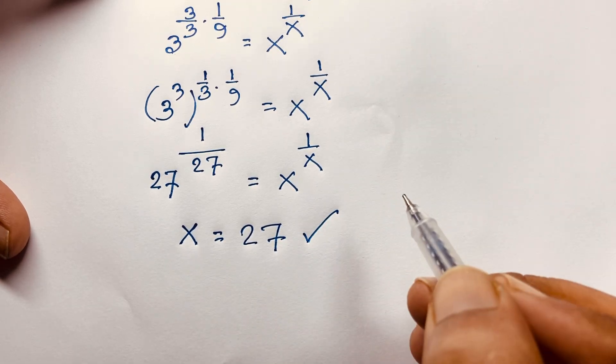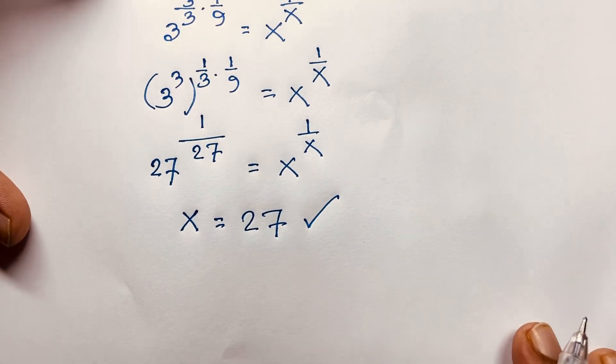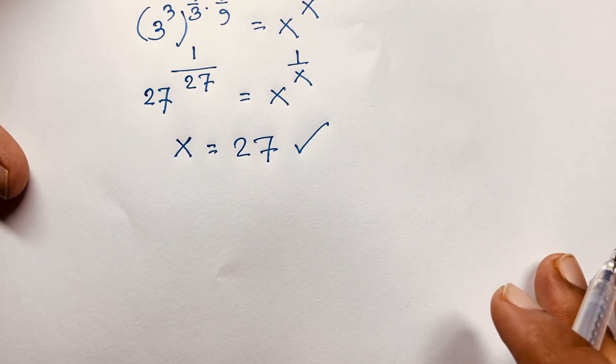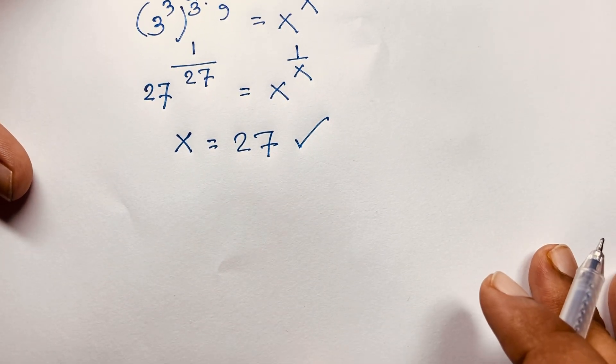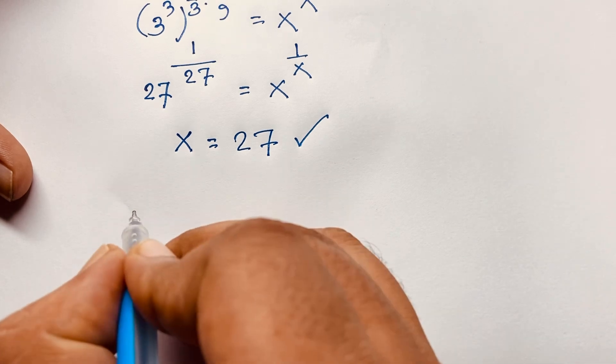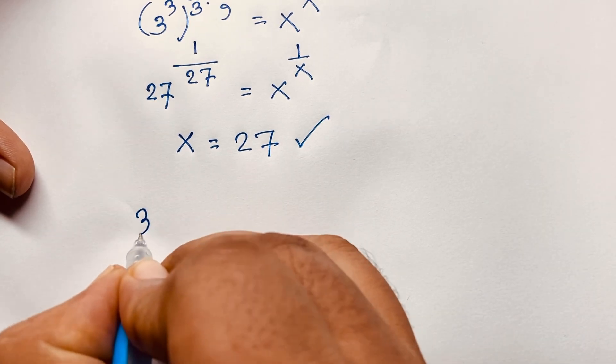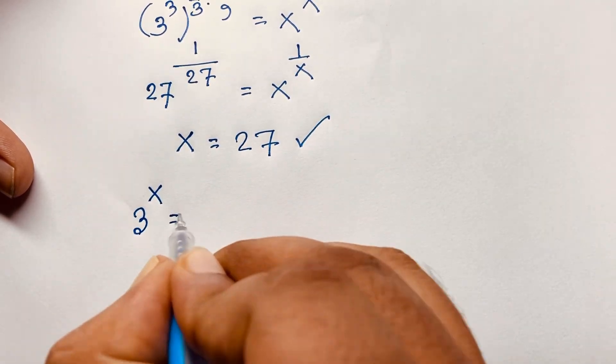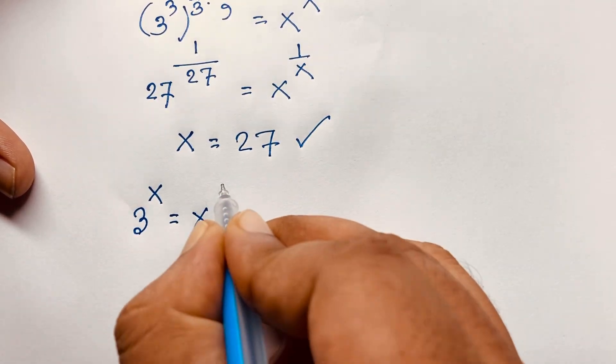x equals 27 — this is our final answer to this exponential math problem. Let's verify our answer. We have 3 to the power x is equal to x to the power 9.